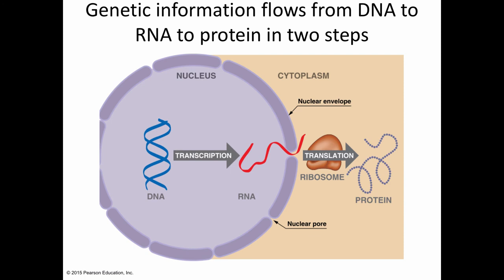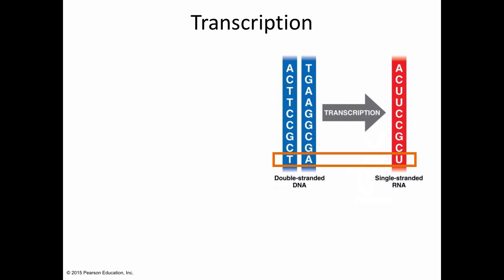We can extract information from DNA to make proteins in a two-step process. First is transcription, which happens in the nucleus — copying some information from a DNA strand and making an RNA strand, specifically messenger RNA. That messenger RNA leaves the nucleus and gets translated by the ribosome. Translation involves a different type of RNA molecule that brings amino acids to the ribosome — because a protein is simply amino acids linked together. We'll cover this in detail in the next video.